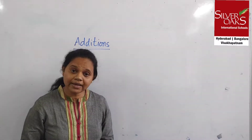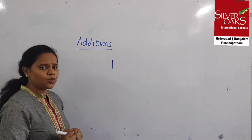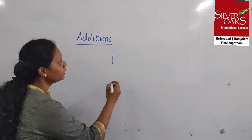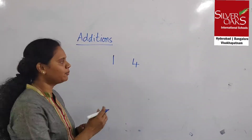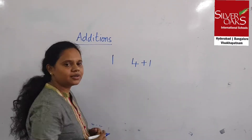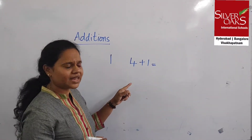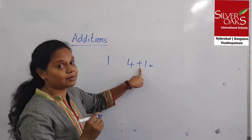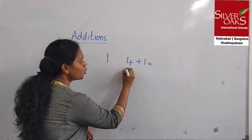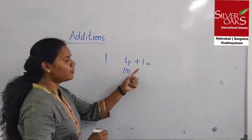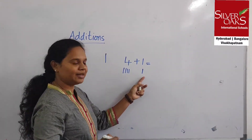You know how to draw a line? This is how we are going to draw a line. Suppose if I want to take the number 4 and I want to add one more number to 4. So for addition we will be using the plus sign and equal sign also. For this 4 we need to draw 4 lines. For 1, how many lines do we draw? Only 1 line.